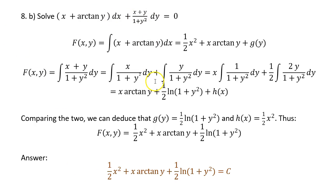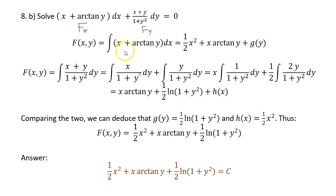Now let's solve the exact differential equation. We think of the first part as some function's partial derivative with respect to x and the second as its partial derivative with respect to y. To recover the original function, we integrate with respect to x. The anti-derivative of x is ½x², and arctangent of y is treated as a constant, so we attach an x to it.